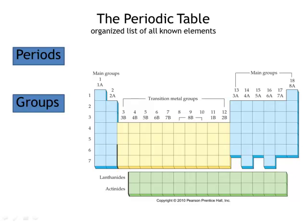On to the periodic table. The periodic table is organized into periods and groups. Periods are the rows of elements, and groups are the columns.